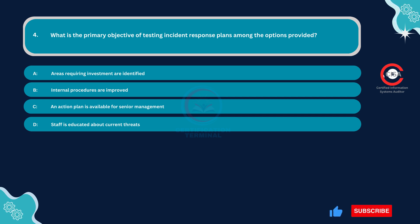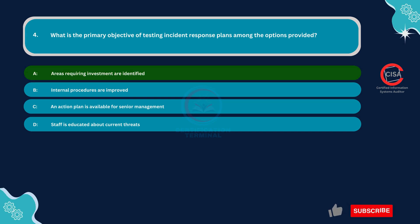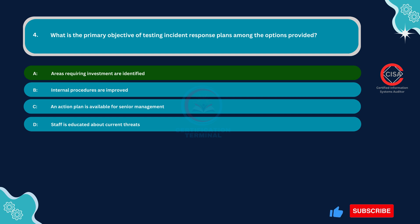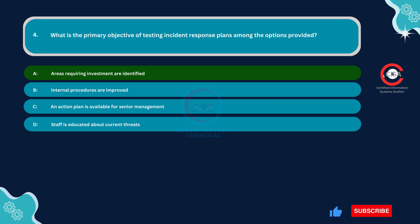The correct answer is Option A — areas requiring investment are identified. The primary objective of testing incident response plans is to identify areas where additional resources or investments are needed to strengthen the organization's ability to respond to cybersecurity incidents effectively.